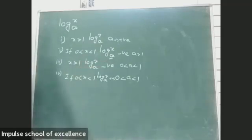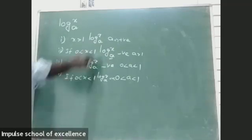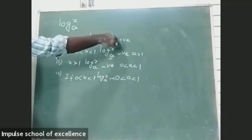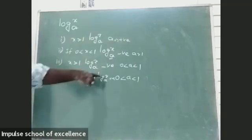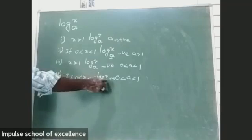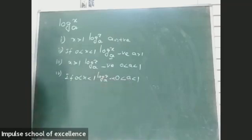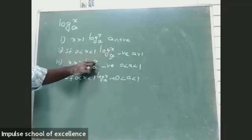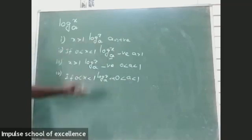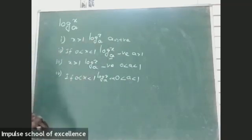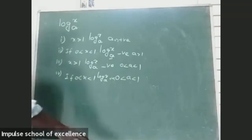Please remember: when power and base are both positive, the total value is positive. When power and base are both negative, the total value is also positive. When power is positive and base is negative, we get a negative value.